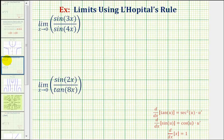Looking at our first example, we have the limit as x approaches zero of sine three x divided by sine four x. Notice as x approaches zero, both the numerator and denominator approach zero, so we do have an indeterminate form and therefore we can apply L'Hopital's Rule.